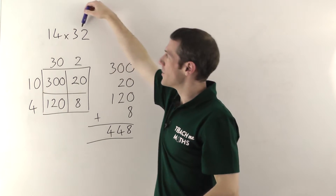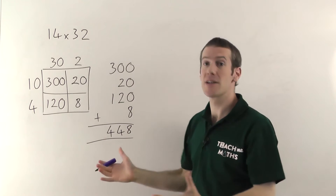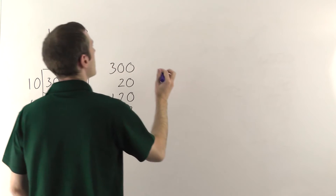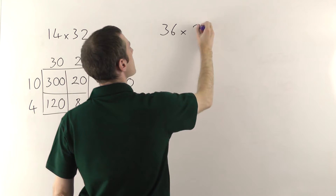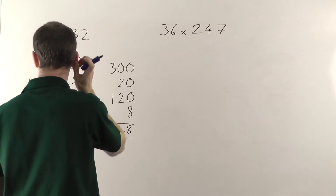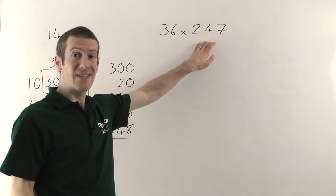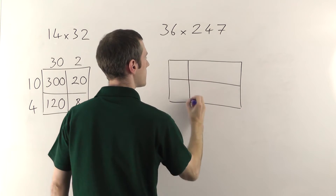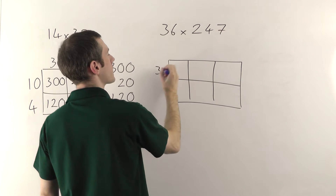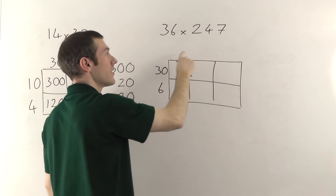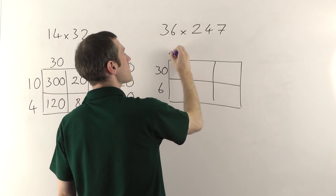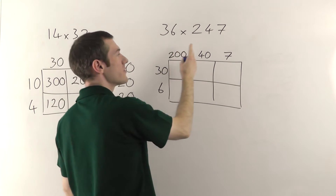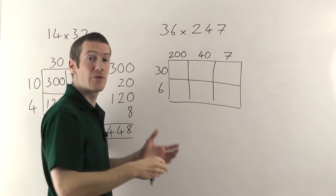Now if you've got bigger numbers than just two-digit numbers, then the grid is going to become bigger as well. So let me show you one of those and then I'll give you some final thoughts. This time we're going to have 36 times 247 — so it's a two-digit by a three-digit number. You need a two by three grid. 36 goes down here and then 247 we put along the top and you split it up — so 247 is split into hundreds, tens and units like that. It's a times table grid, fill it out in the same way.